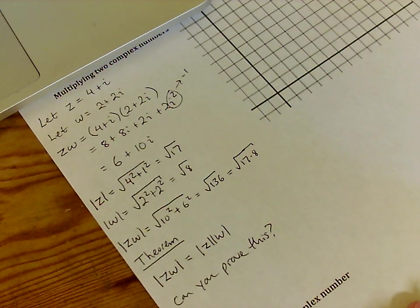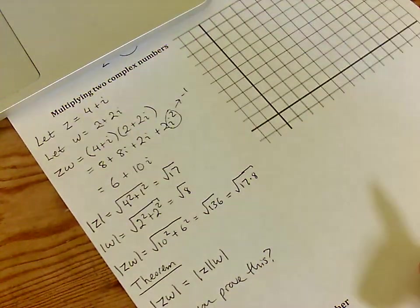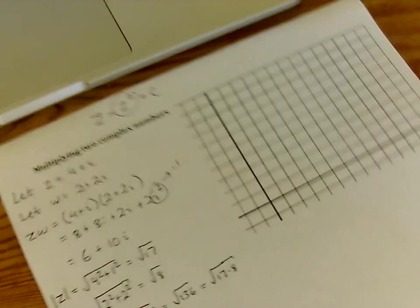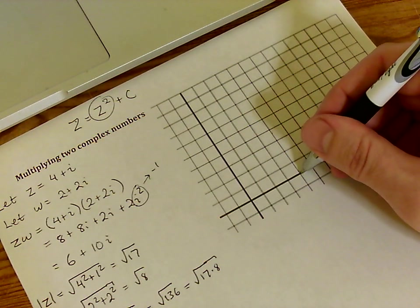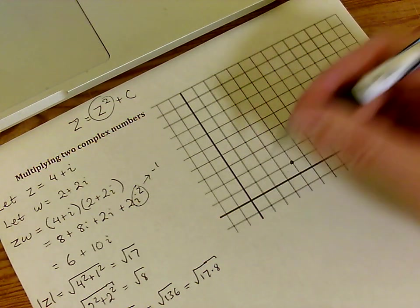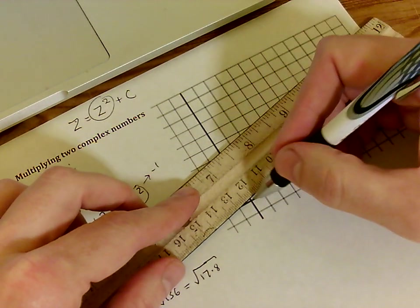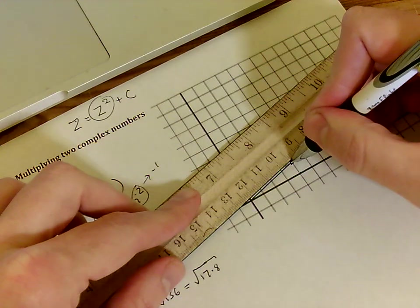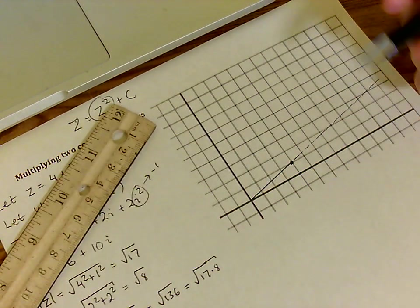But let's see something way cooler than that. Let's actually plot z, w, and z times w on the complex plane. So z is 4 plus i, so here's 1, 2, 3, 4, plus i. And I'm going to extend that line, because we're eventually going to want to look at its angle.